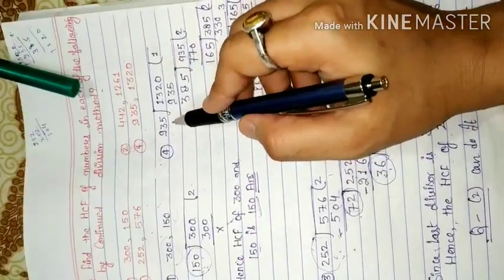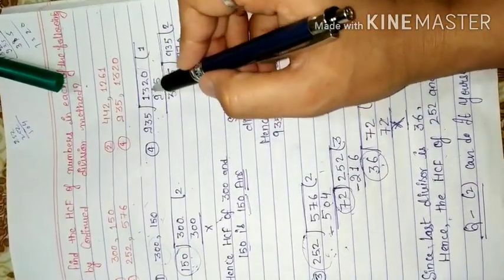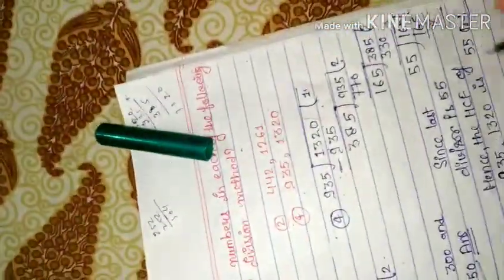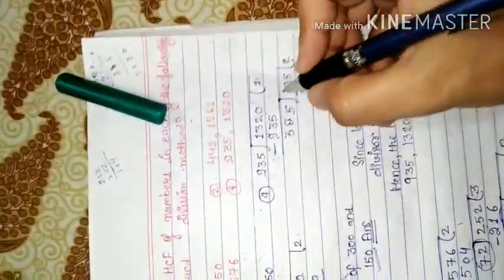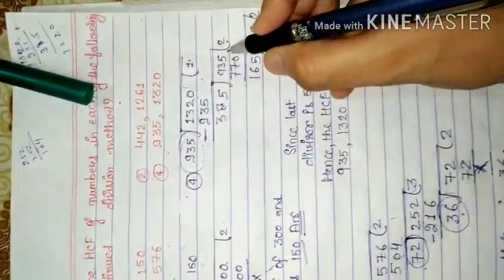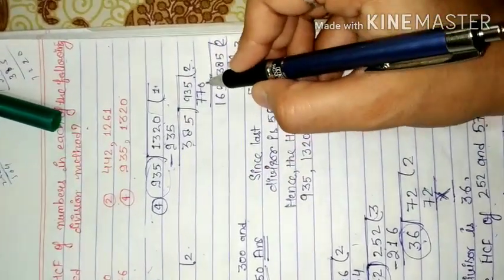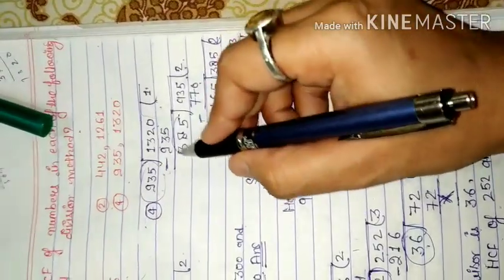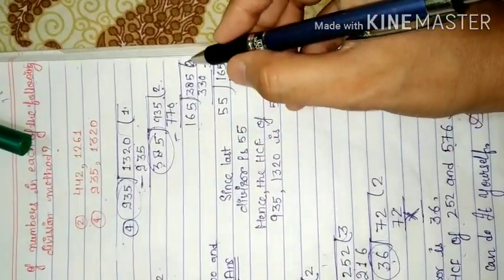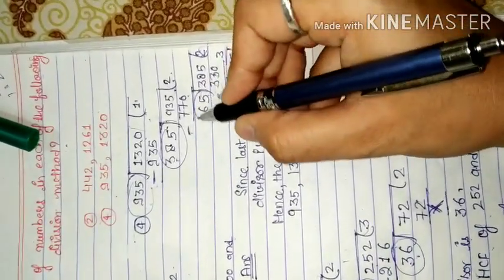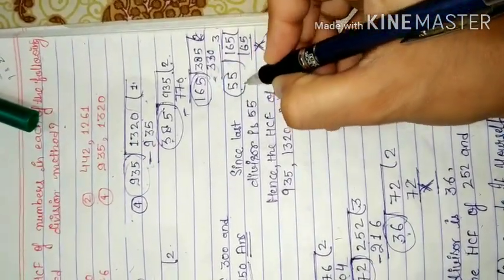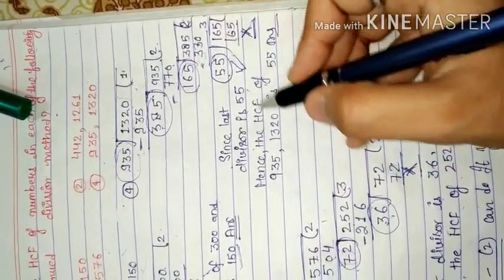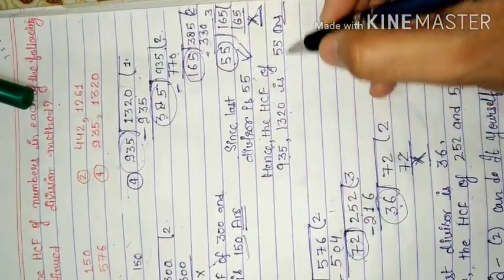Next is 935 and 1320. We divide 385 into 935. We divide 385 by 7 to get 55. We divide 165 by 3 to get 55. Since the last divisor is 55, hence the HCF of 935 and 1320 is 55.